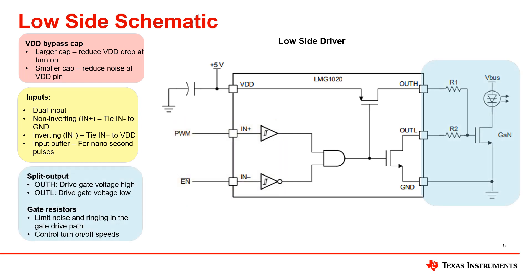At the output, we have a split output for our single-channel GAN drivers. This is to have one output drive the gate voltage high and the other to drive it low. We also have gate resistors which help control the turn-on and turn-off speeds, along with helping to limit noise and ringing in the gate drive path.